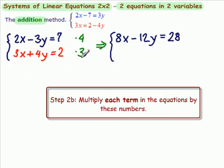And then we have 3 times 3 is 9x, 3 times 4 is plus 12y. We see that we've got it going right, equals, and 3 times 2 is 6.